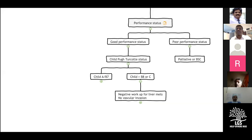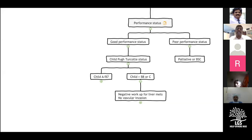A patient with poor performance status goes straight into palliative care or best supportive care. For a patient with good performance status, we go into the Child-Pugh status, dividing into Child A and B7, and anything more than B8 or C. You can also use a MELD score of 10 or 12 to indicate rough liver function.